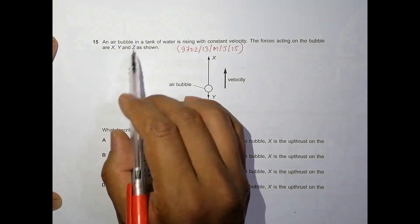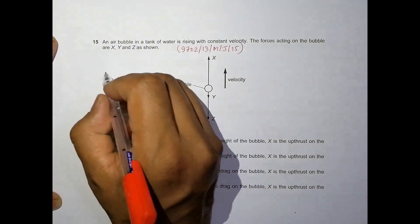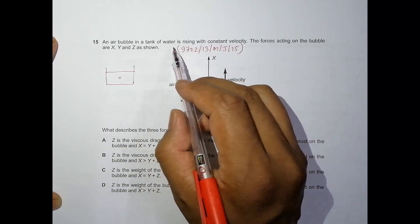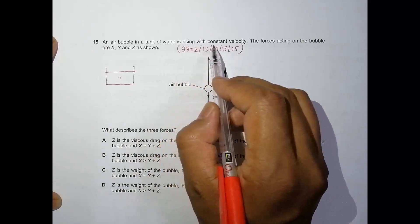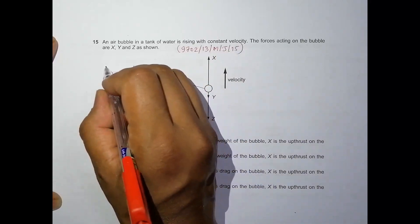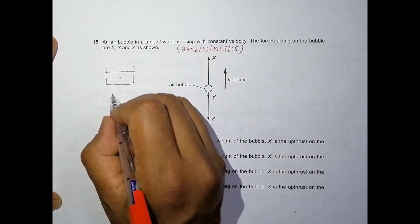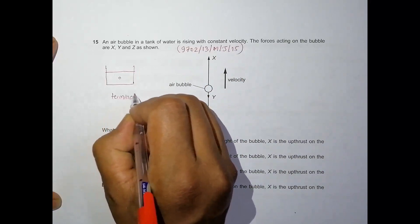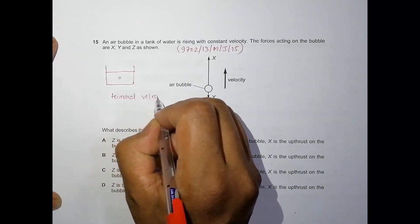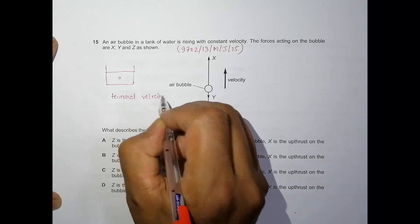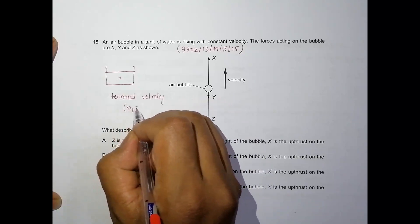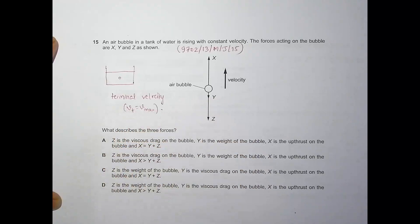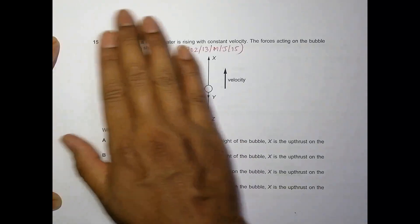An air bubble in a tank of water is rising with a constant velocity. Constant velocity means this is a case of terminal velocity — the maximum velocity possible. We call it VT or V max. So the bubble is rising upward with terminal velocity.